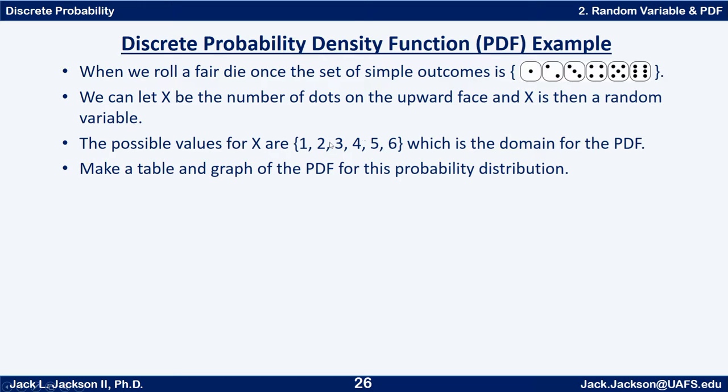These values of the random variable are actually the domain of the PDF. Technically, the random variable is a function, so the input is the actual outcomes in the sample space and the output is the values here. But then these values will be the input for the PDF. You're really just going to think of these X values as the possible inputs for your PDF. Let's see if you can make a table and graph of the PDF for this particular probability distribution. Press pause and come back when you're finished.